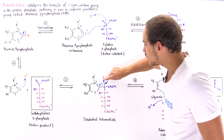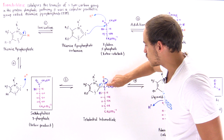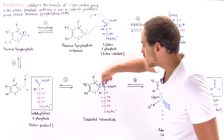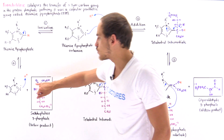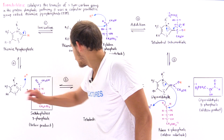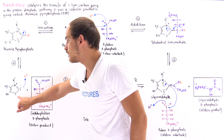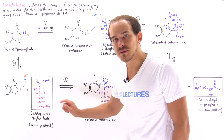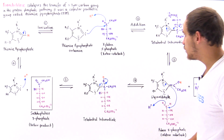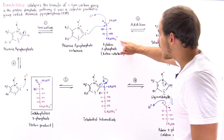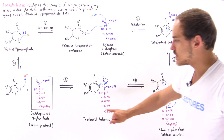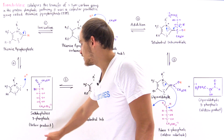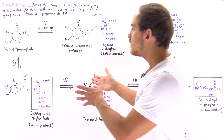The sigma bond between the H atom and the oxygen is broken; simultaneously, a pi bond forms between the oxygen and the carbon, breaking the sigma bond, and those two electrons end up on the carbon. We reform the thiamine pyrophosphate in its carboanion form, and we form the 7-carbon second product — sedoheptulose-7-phosphate, the ketose product.